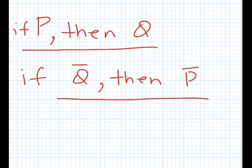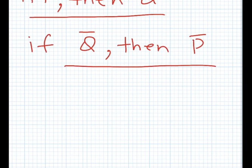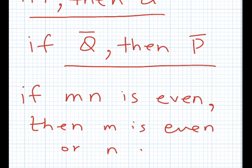How is this helpful? It is helpful if proving this is easier than proving the direct statement. Let's see an example: if we have to show that if a product of integers m and n is even, then m is even or n is even.